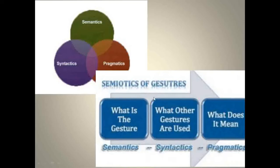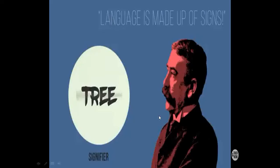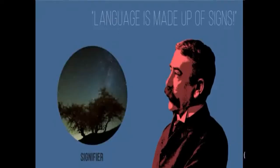To understand it better, just a flow chart to indicate what semantics is: what is a gesture — semantics would be what it refers to, what is being talked about. Syntactics would be what other gestures or signs are included along with one sign. And pragmatics — what does it mean to the one who is using it, and what does it mean to the one who is receiving it? Just a diagram to indicate that signifier and signified are two sides of a coin.